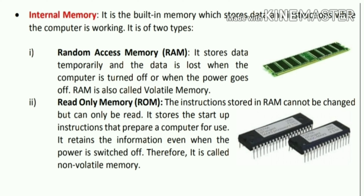Random access memory, also known as RAM, stores data temporarily — something we want to store for only a short period of time. Data is lost when the computer is turned off, which happens when we don't save the data. So it is very volatile. When the power goes, the data goes. That is why we keep saying save the file. If you don't save the file, the memory is stored only in temporary volatile memory.